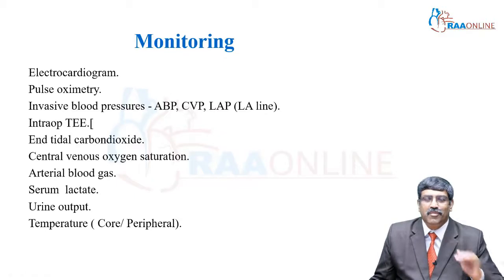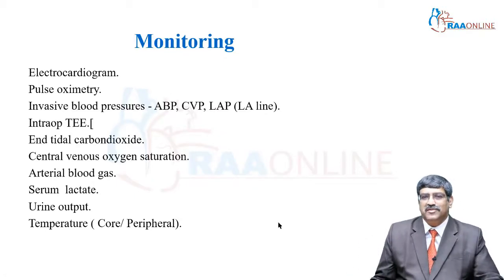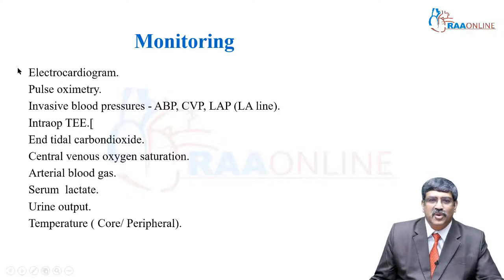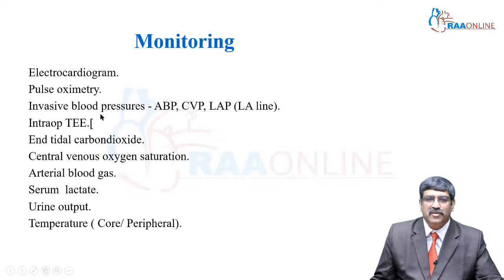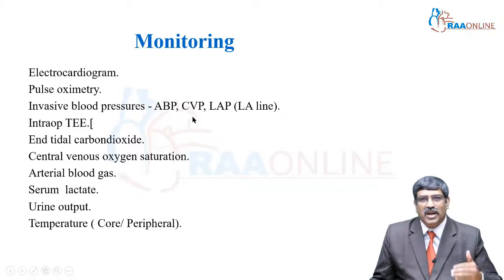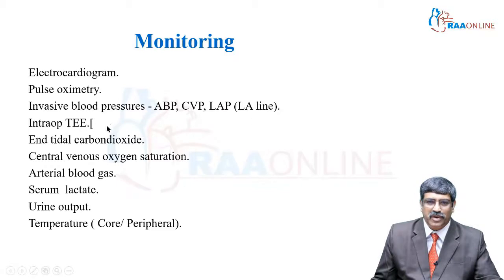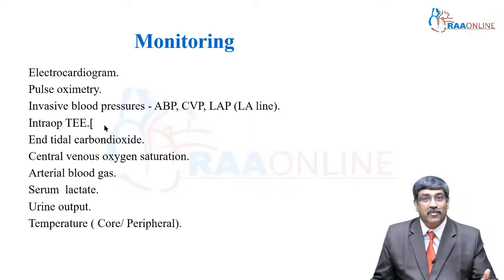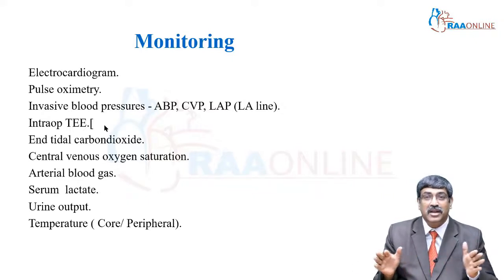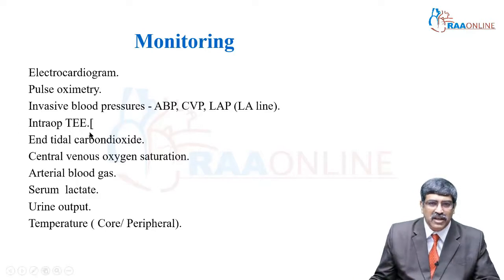Coming to the perioperative period, the monitors required for surgical correction include electrocardiogram and pulse oximetry. For invasive pressure monitoring, you need an arterial line and central venous pressure. Nowadays, because of the non-compliant left atrium, monitoring LA pressure through an LA line is very important for weaning off cardiopulmonary bypass. Intraoperative echocardiography — TEE — is very important to assess adequacy of repair, whether drainage is adequate, and whether any obstruction is developing.